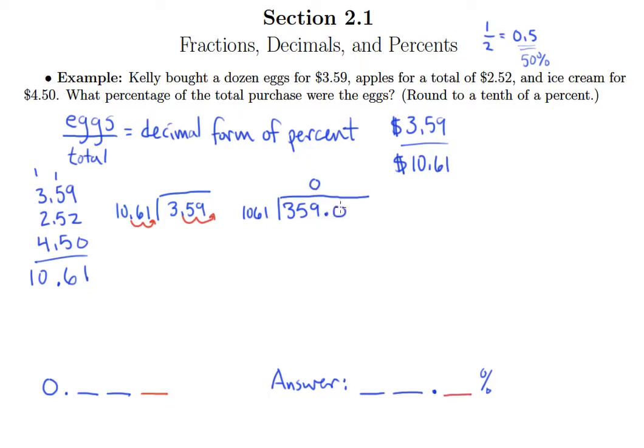Put a decimal place and add a zero there, and then put that decimal point in the quotient. 1061 goes into 3590 three times. Three times one is three, three times six is 18, three times zero plus one is one, and three times one is three. So we subtract there, do our subtraction and borrowing, and we end up with 407. We keep going, drop a zero down. 1061 is not going to fit in here four times, so again we'll have a three up here.